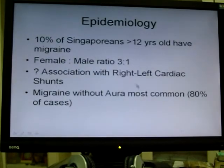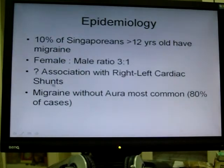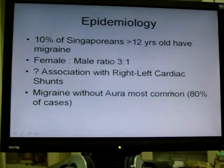Epidemiology of migraine in Singapore: 10% of Singaporeans over 12 years old have migraine, with a female-to-male ratio of 3 to 1, so migraine is more common in females. Some people have said there may be an association with right-to-left cardiac shunts, though we don't know why. Migraine without aura is the most common kind of migraine, accounting for about 80% depending on which study you quote.